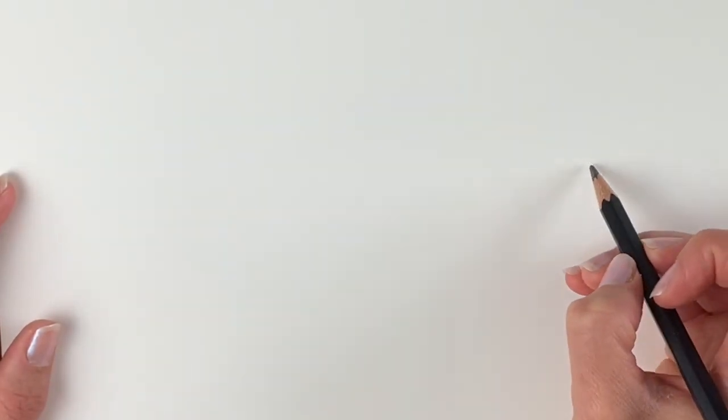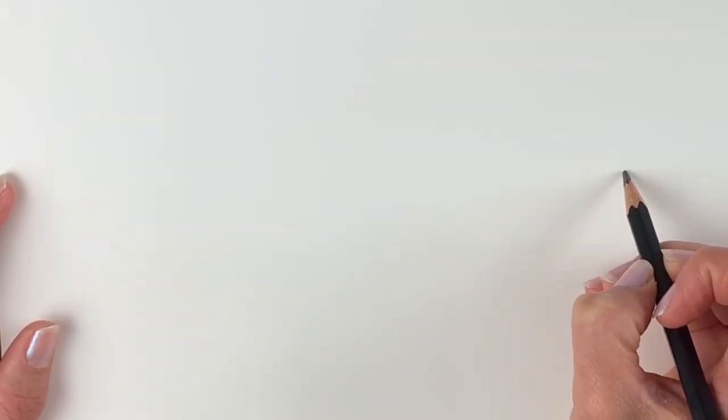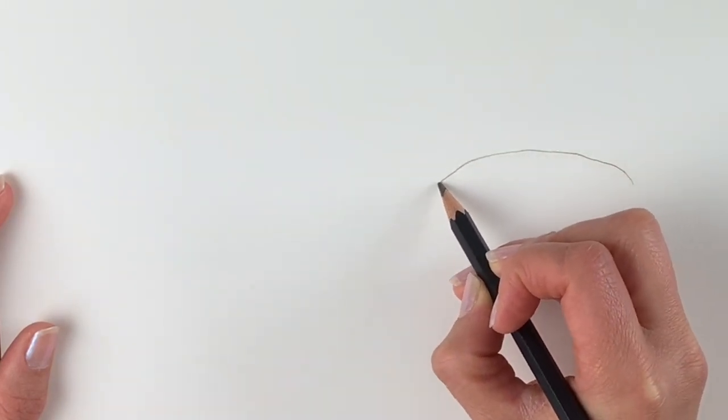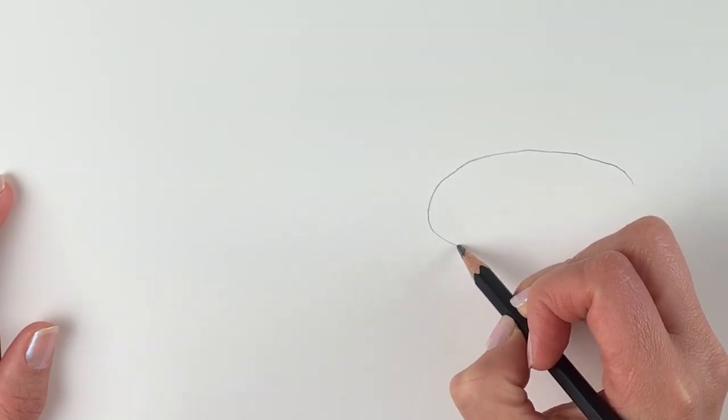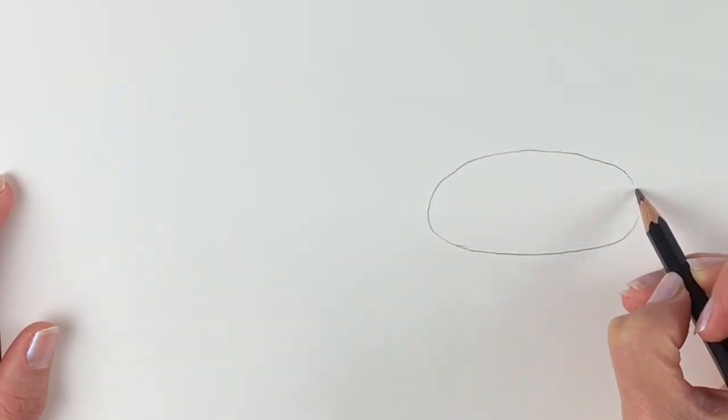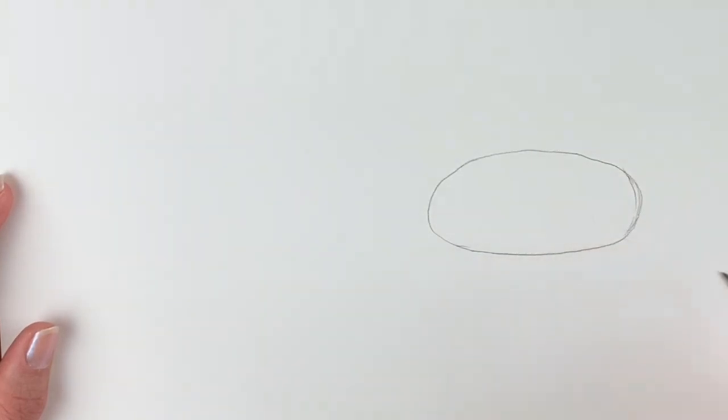We're going to start off nice and easy with an oval shape just over here on the right hand side. So just draw a simple oval shape, just draw it lightly in pencil. I'm doing it a little bit heavier just so you can see it on camera. So just roughly draw your oval shape just like this.